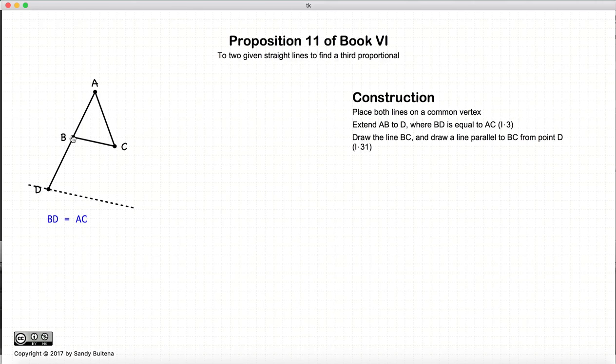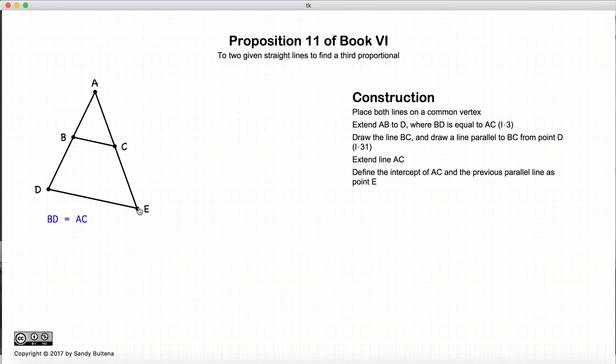Now we draw the line BC, and we draw a line parallel to BC through the point D, again using the methods described in Proposition 31 of Book 1. We extend the line AC until it intersects with our previously drawn line, and we define that point to be E.